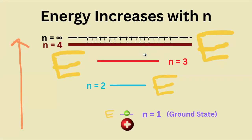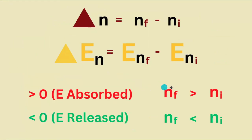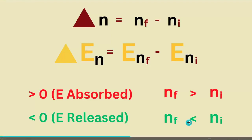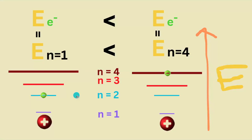As demonstrated earlier, n and the energy of n are directly proportional, meaning that they both increase together and they both decrease together. Because of this relationship, we can specify our change in energy equation to explicitly acknowledge the energy shells that we jump in between — where if n increases, energy increases, and if n decreases, energy also decreases. And don't forget, this is in reference to the electron which occupies these different shells.